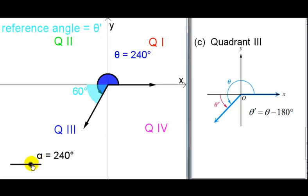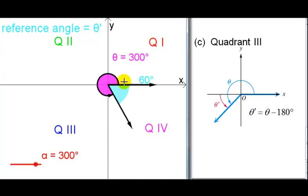Lastly let's go into quadrant 4. Here's my angle, 300 degrees. I'm in quadrant 4. Where's my reference angle? This is the acute angle the terminal side makes with the x-axis. It is 60 degrees.